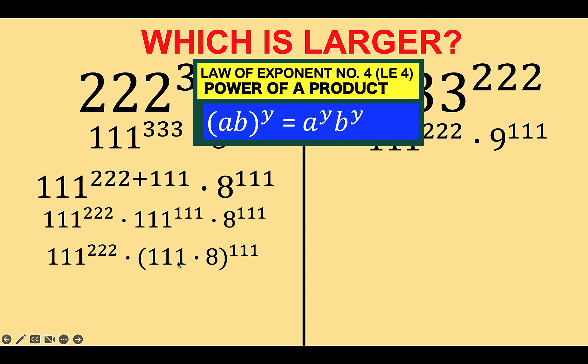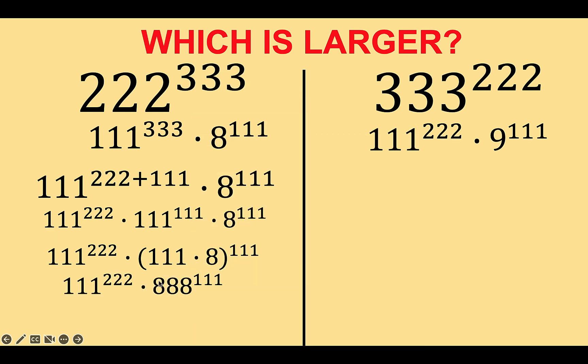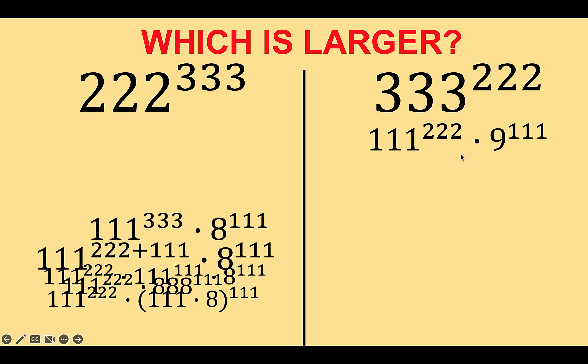The rest are copied. And 111 times 8 is 888. So we now simplified it this way. Now let's compare this result to what we have at the right side.